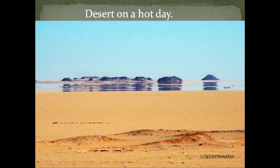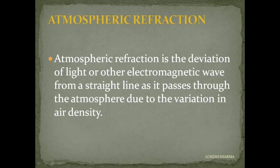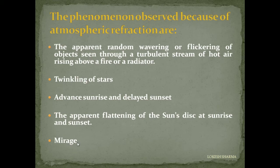This is a mirage created in hot deserts, and this is a mirage created in very cold climatic areas. These mirages occur because of atmospheric refraction of light. Atmospheric refraction is the deviation of light or other electromagnetic waves from a straight line as they pass through the atmosphere, due to variation in air density. The different phenomena observed because of atmospheric refraction include: the apparent random wavering or flickering of objects seen through a turbulent stream of hot air rising above a fire or radiator, twinkling of stars, advanced sunrise and delayed sunset, the apparent flattening of the sun's disk at sunrise and sunset, and mirage — though mirage is not in the Class 10 course.